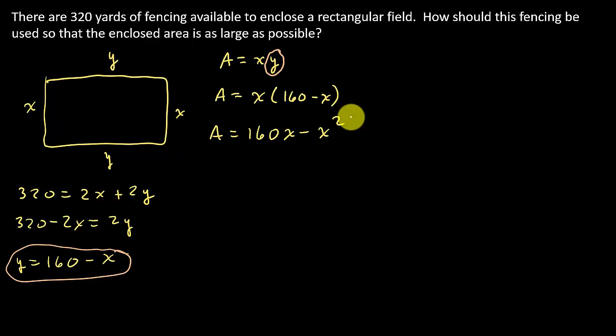And so now I take the derivative. That's going to be 160 minus 2x. Set that equal to 0. And so that's going to give me 160 equals 2x, or x equals 80. And this is in terms of yards. So that's 80 yards.